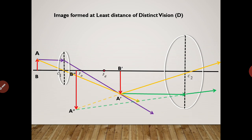We need some construction here to define magnifying power. So we extend this line and draw the construction with dotted lines. Let us take point P. We have the angle alpha formed by the object at the eye when the object is supposed to be placed at the position of the image.